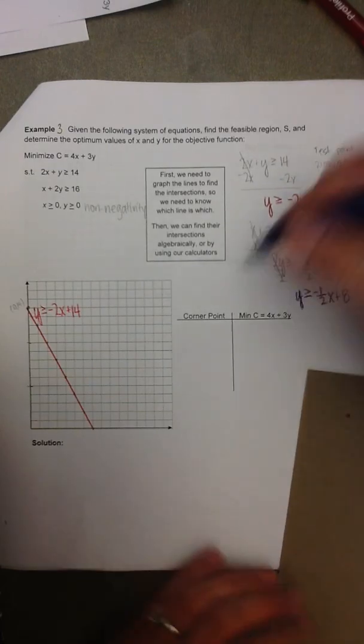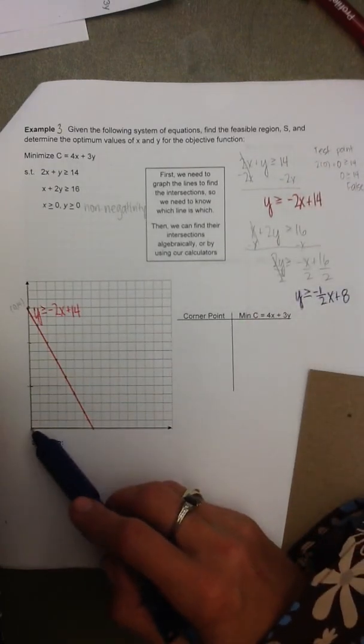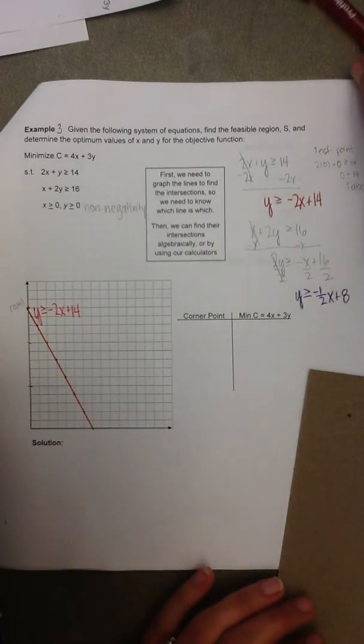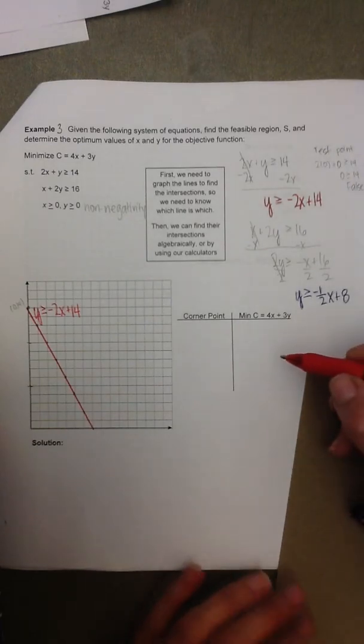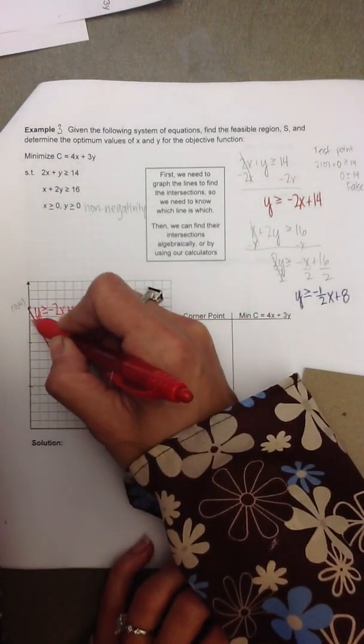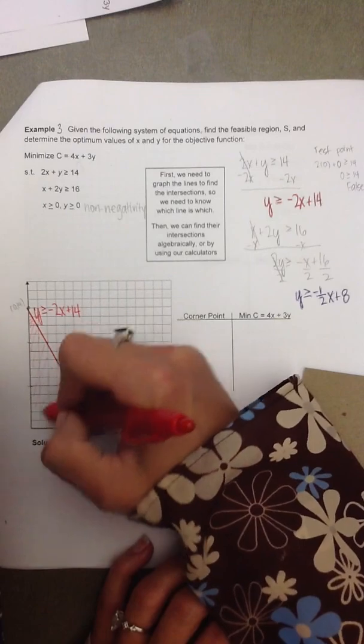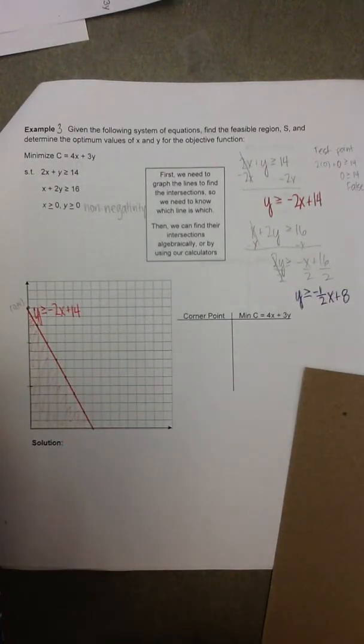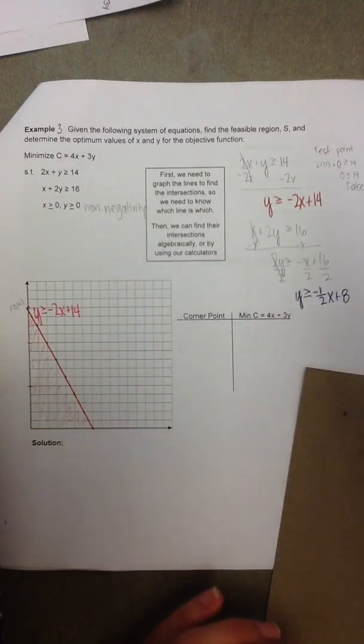So points below the line, which 0, 0 is below the line, give us a false statement. And because of the textbook we're using, we are crossing out or shading the false side. If you happen to be using a different textbook, you might shade the true side, in which case this would be the true side.